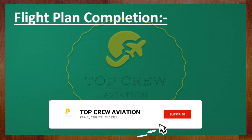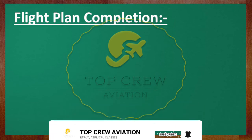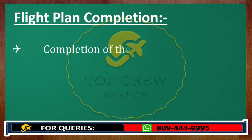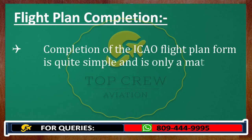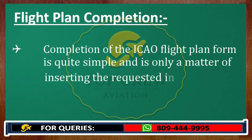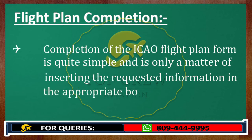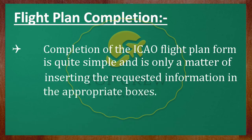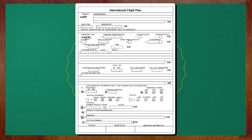Now let's understand how we complete the flight plan. Flight plan completion is quite simple and is only a matter of inserting the requested information in the appropriate boxes. You can have a look — this is the ICAO flight plan, this is how it looks. We just need to fill in the spaces provided with the information asked.